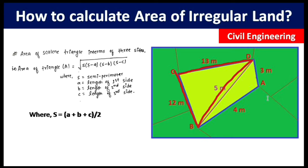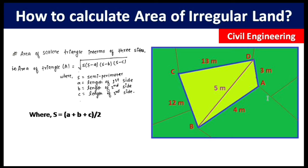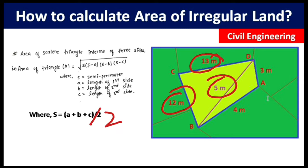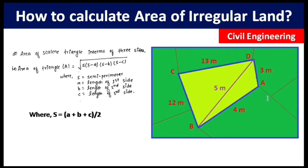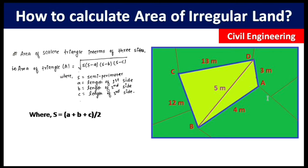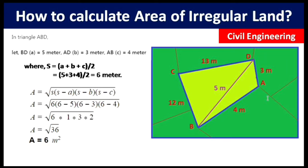If we are taking a triangle with sides a, b, and c, the semi-perimeter s is half the sum of all sides: s = (a + b + c) / 2. So we add all the sides and divide by two to get the semi-perimeter s.